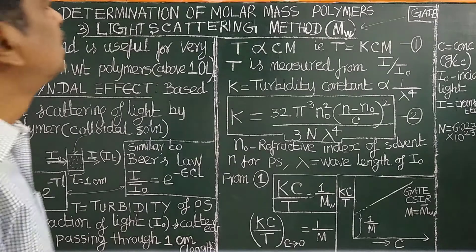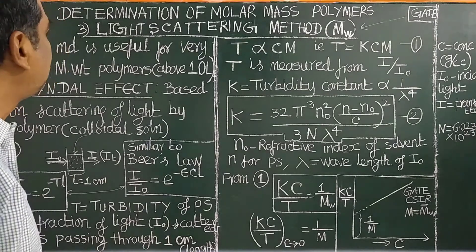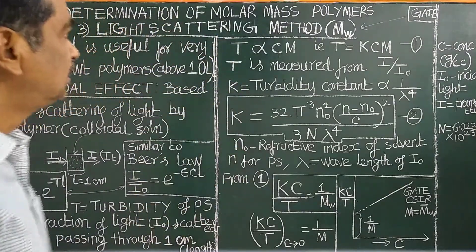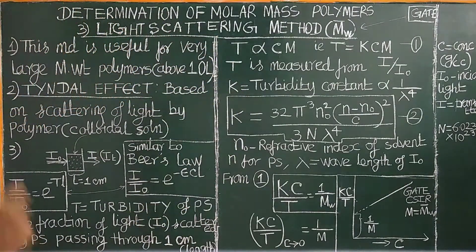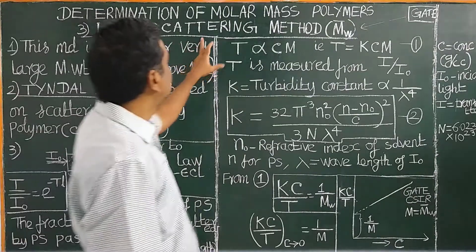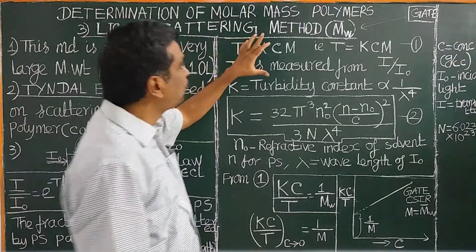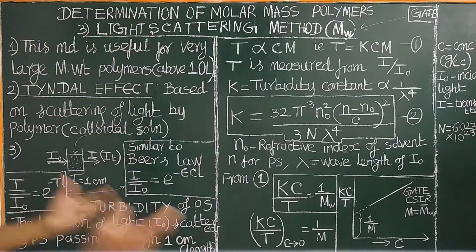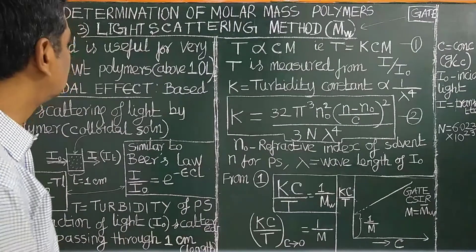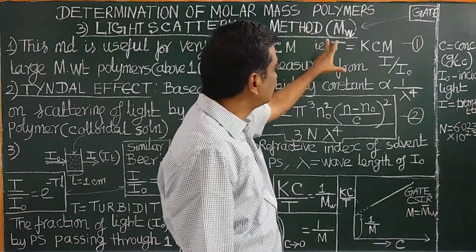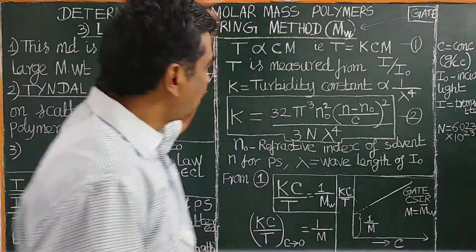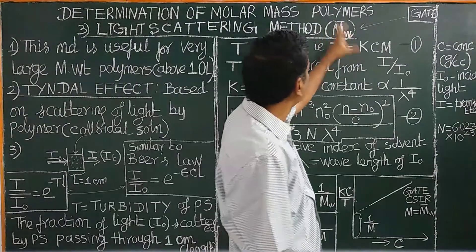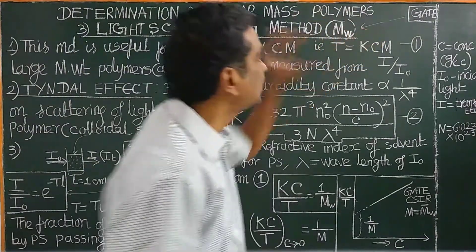Good morning. Let us study today the light-scattering method — how this method is used for the determination of molar mass of polymer. Using this method, the mass-average or weight-average molar mass of polymer is determined.